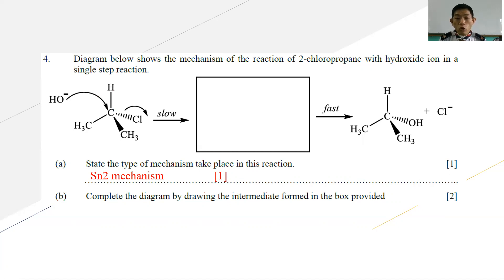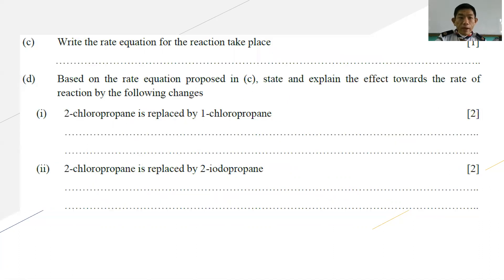Part B: Complete the diagram below, drawing the intermediate formed in the box. You are expected to draw the carbocation intermediate. You form this unstable intermediate with C-OH with CH3, CH3, and you have this assigned as double plus here. So this will give you two marks.